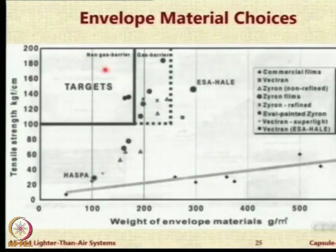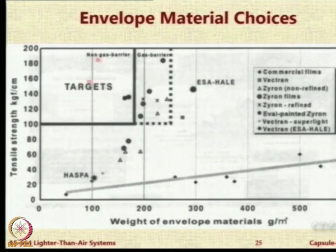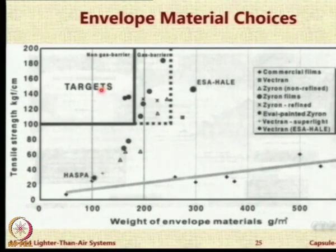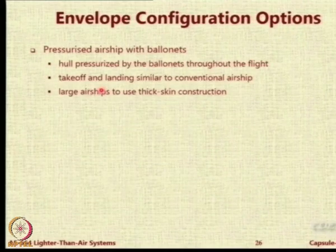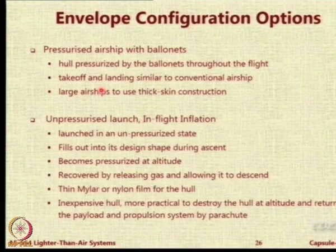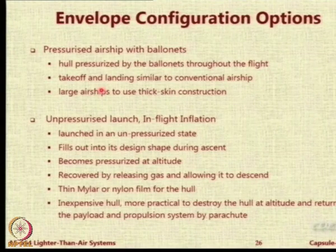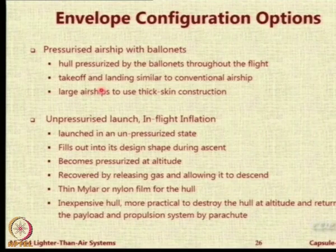These are the challenges. When we come to the envelope material choices, these are the targets which will fulfill our requirements. We want very low density with high strength material. For envelope configuration options, different options may be considered. We have to take care of pressurization, takeoff and landing. You need a structure and infrastructure — these are the other requirements for the configuration.